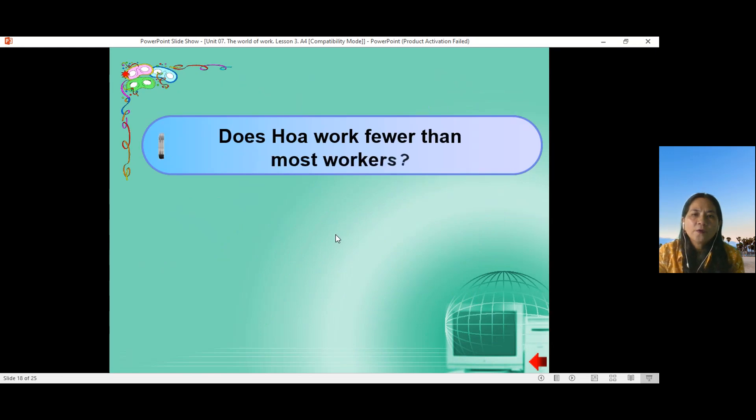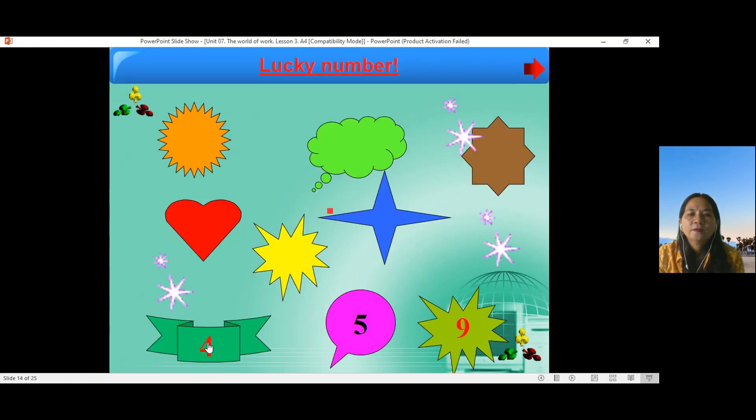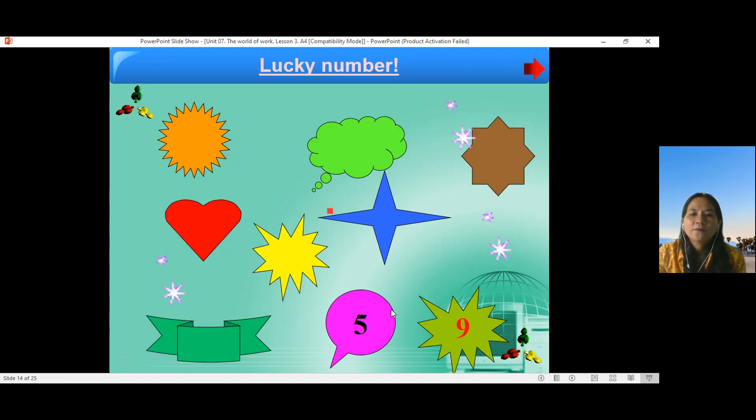Number eight. Does Hoa work fewer than most workers? Câu này là letter D trong sách giáo khoa. Okay. No, she doesn't. She works more than most workers. Về nhà các bạn viết câu trả lời vào vở dùng cô nhé. Number four. Number four là chúng ta làm lại câu hồi nãy ha. Nào, number five.